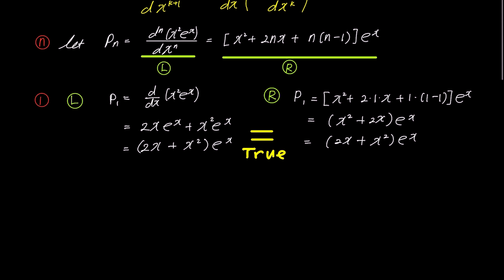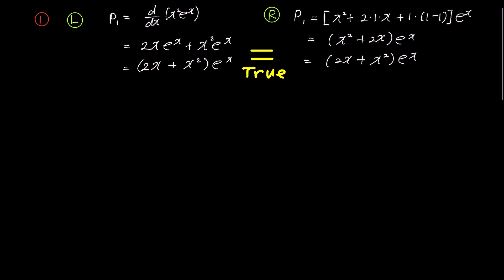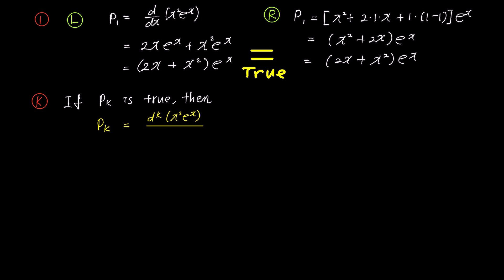Moving on to the next step: assuming the kth domino falls, we now check if the k plus 1th domino falls immediately afterward. If P sub k is true, then P sub k represents the kth derivative of x squared times e to the power of x, given by bracket x squared plus 2kx plus k times (k minus 1) bracket times e to the power of x.